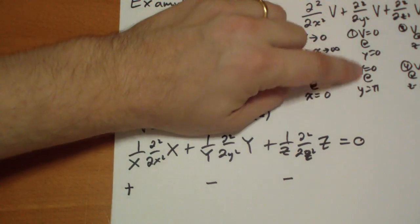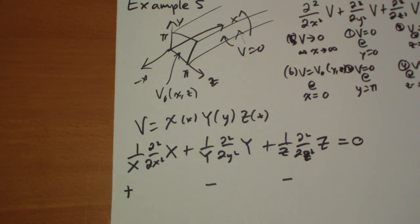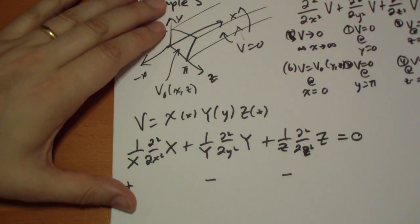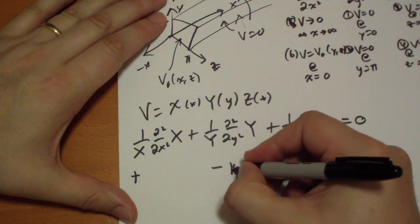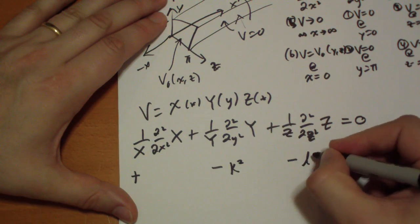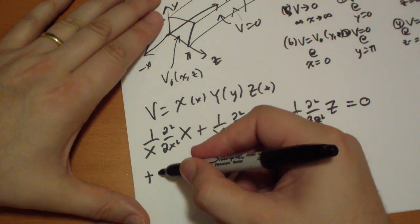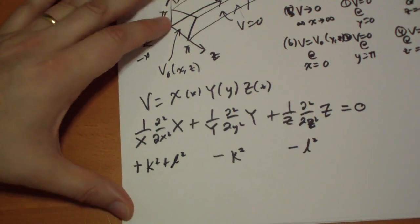So, let's set this to minus k squared. Set this to minus l squared. And this will be k squared plus l squared.